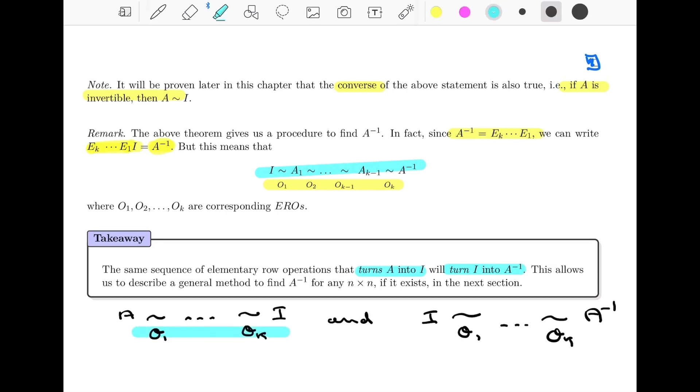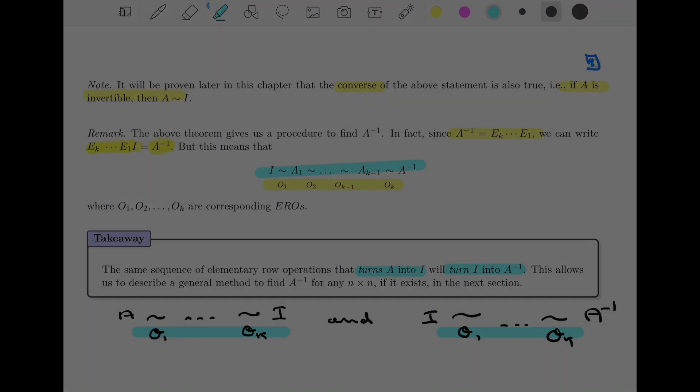That make sense? So these two sequences of elementary operations are the same. And this is what we're going to use in the next section to develop a method to find the inverse of any matrix, any square matrix if that inverse exists. And so we'll end section 5.